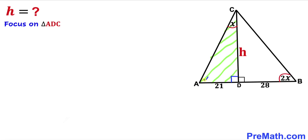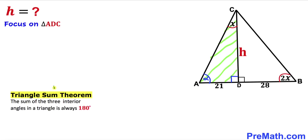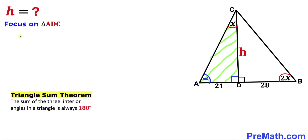Let me go ahead and call this angle alpha and now let's recall the triangle sum theorem. According to this theorem, the sum of the three interior angles in a triangle is always equal to 180 degrees. So therefore in our case, the sum of all three angles must be 180 degrees. So we write: alpha plus x plus 90 degrees equals 180 degrees.